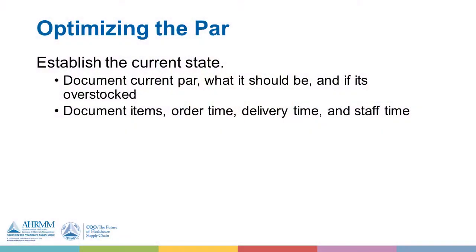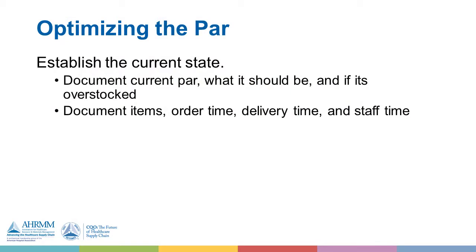When we talk about optimizing the PAR, we want to establish the current state, which means creating a report that tells us what's on our current PAR, what it should be, and if we're already overstocking at the current PAR level. Also document and establish how many items are on the current PAR, what the order time is, the delivery time, and how much time staff are spending ordering supplies, stocking supplies, and routinely throughout the day delivering supplies on demand. All of this will establish the current state and establish a baseline, which we can then compare after we have revised the PAR.